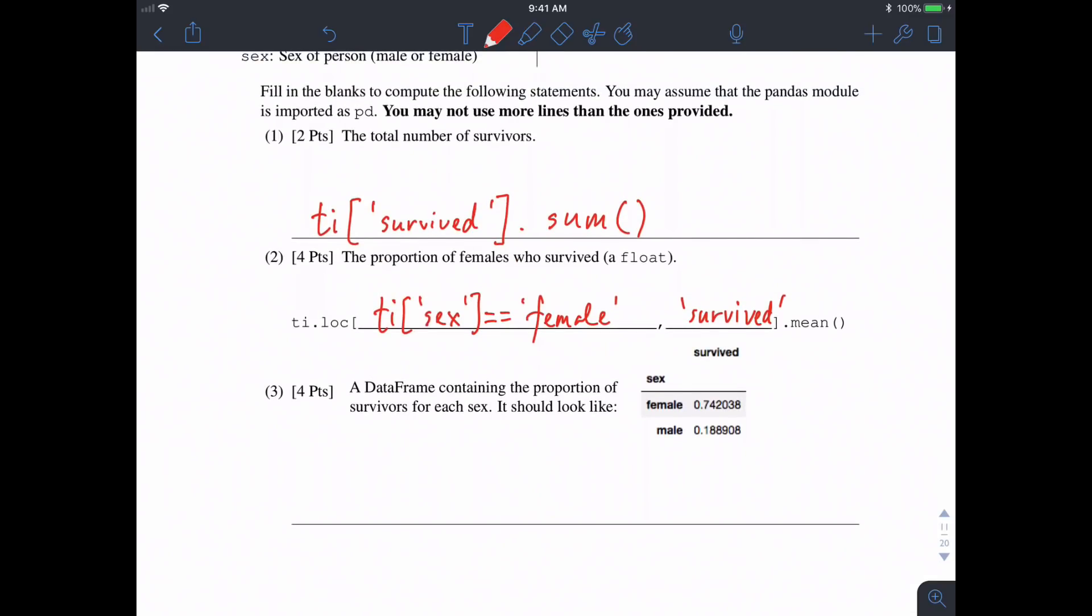First, we want to filter out the columns we care about, which are only survived and sex. So we can do that TI at set. Remember, this needs to be a nested array, because we're indexing in multiple elements survived, comma sex. And now we want to group by sex, because that's what our indices are. So dot group by sex, and take the mean of that, because we want the mean proportion of males and females surviving.